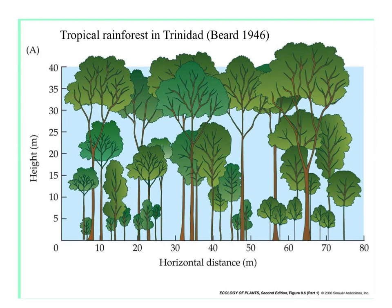We don't see any emergent trees here, just canopy trees — so that would be the B layer. And below that is the sub-canopy: trees with their canopies below the top canopy. And then lower still, the shrub layer. The herbaceous flora on the ground isn't shown in this diagram.